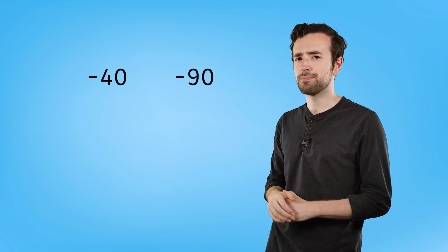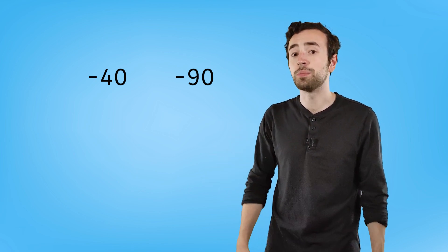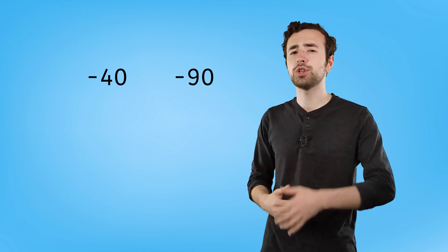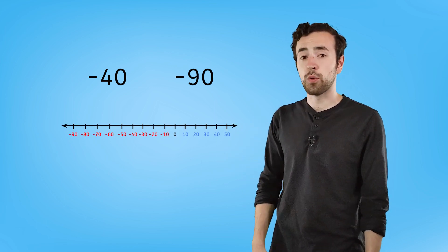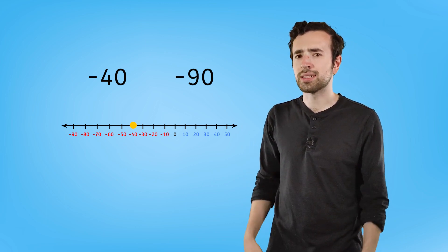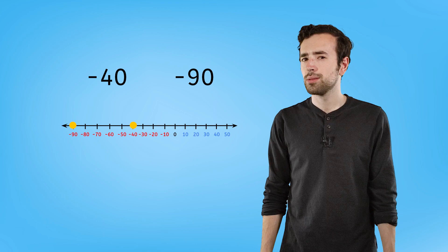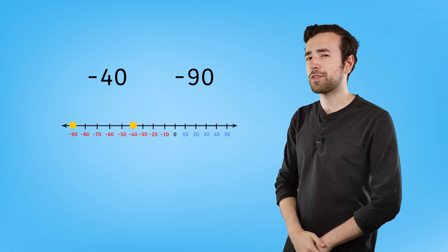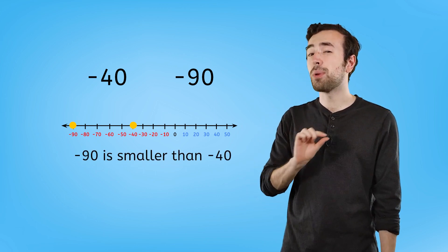Now here's a tricky problem. Which one is smaller — negative 40 or negative 90? Well, we know that 40 is smaller than 90, so it might seem like negative 40 should be smaller than negative 90. Let's put them on a number line. Negative 40 is negative, so it will be 40 units to the left of zero. And negative 90 will be 90 units to the left of zero. Negative 90 is farther to the left, so it's actually the smaller number.